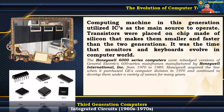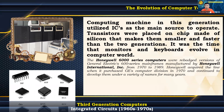Computing machines in the third generation utilized integrated circuits (ICs) as the main source to operate. Transistors were placed on chips made of silicon, making them smaller and faster than the two previous generations. It was during this time that monitors and keyboards evolved in the computer world. The Honeywell 6000 series computers were rebranded versions of General Electric 600 series mainframes, manufactured by Honeywell International Inc. from 1970 to 1989.